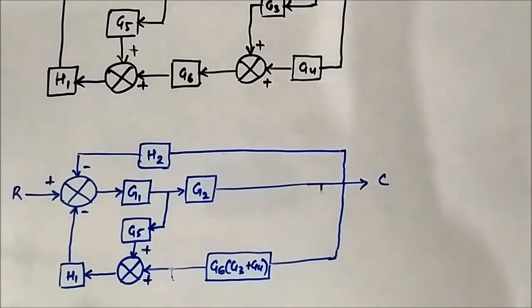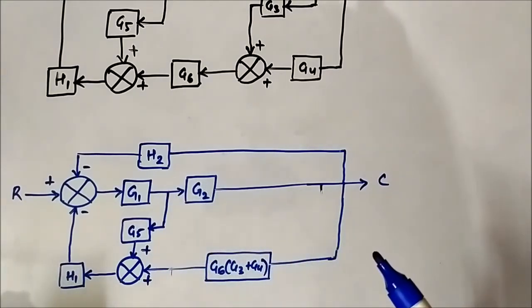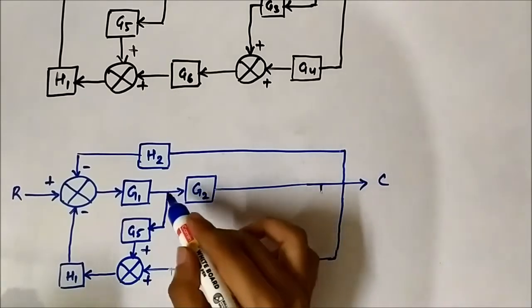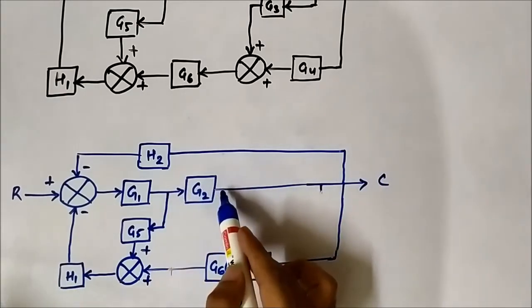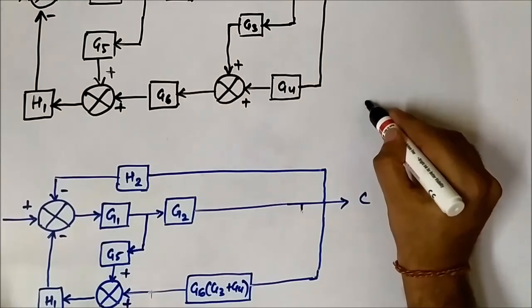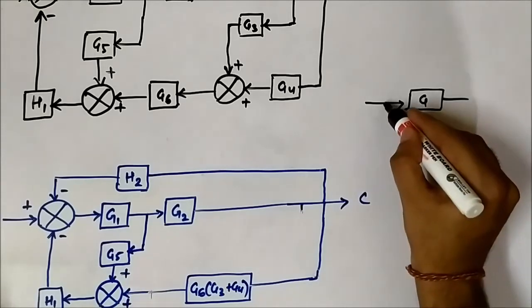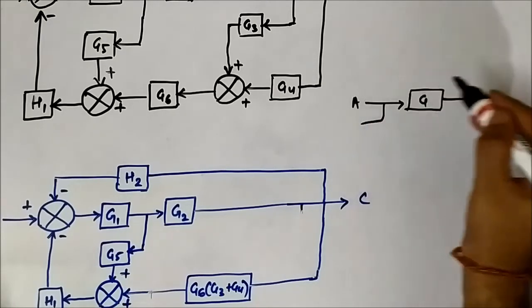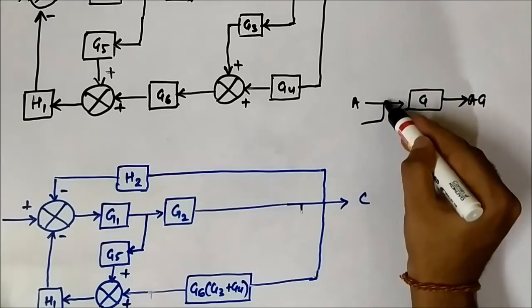If we consider this takeoff point and we try to take this here, this takeoff point if we try to shift it ahead of this G2 block, it will be something like this. The basic mechanism is: suppose we have a block here, let's say G. The takeoff point is here. The input is A, this is AG the output. So the value of this takeoff point is A.